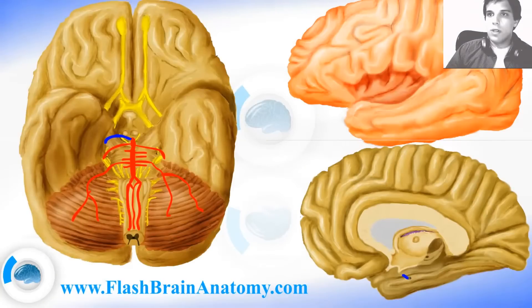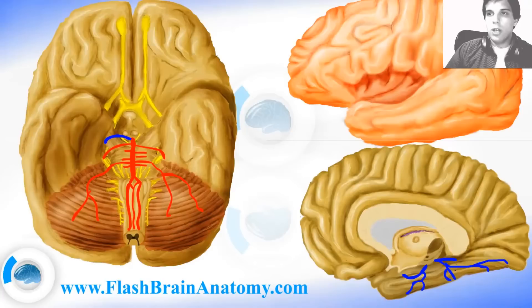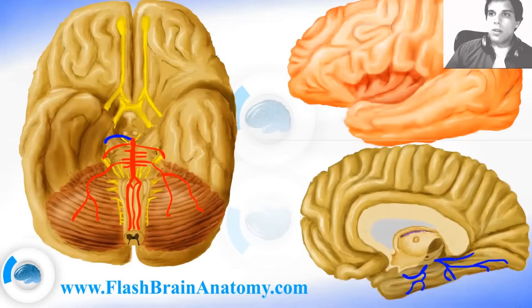First, the artery starts here and goes like this. There is an anterior temporal artery going something like this, then an intermediate temporal branch here, and a posterior temporal branch here. This was the posterior temporal branch, this is the intermediate temporal branch, this was the lateral occipital artery, and this branch was the anterior temporal branch.